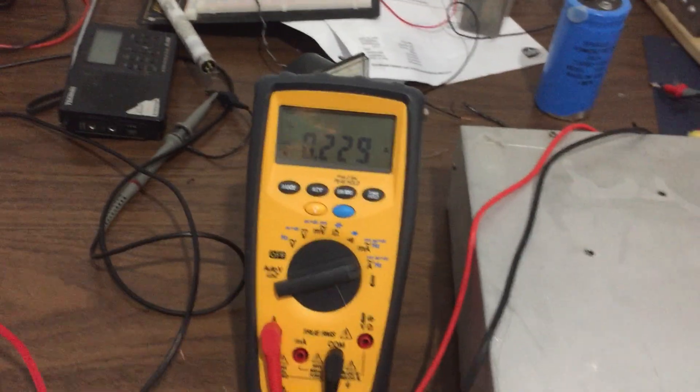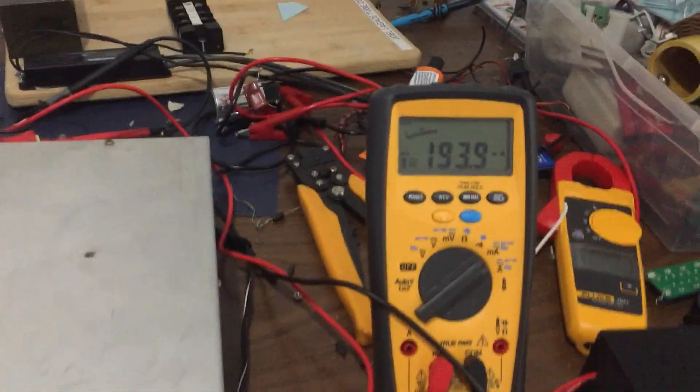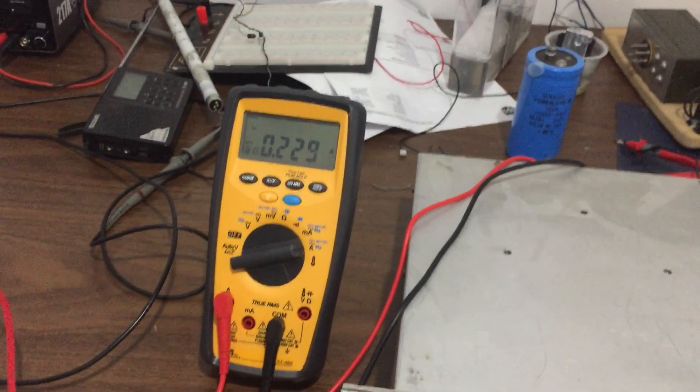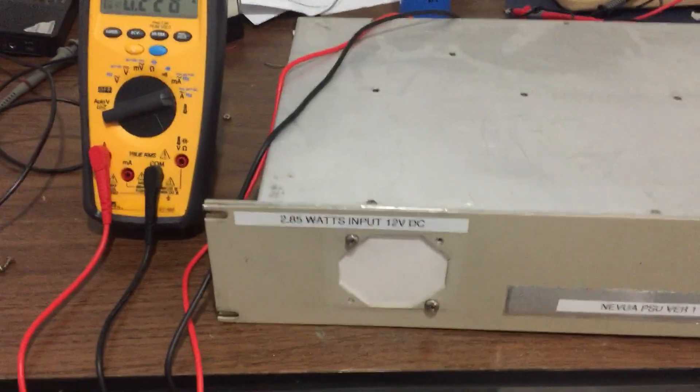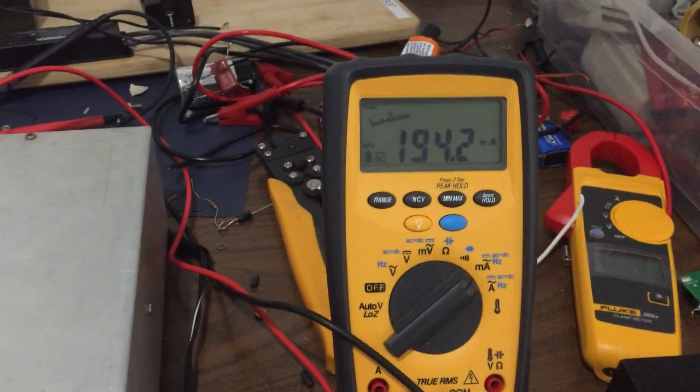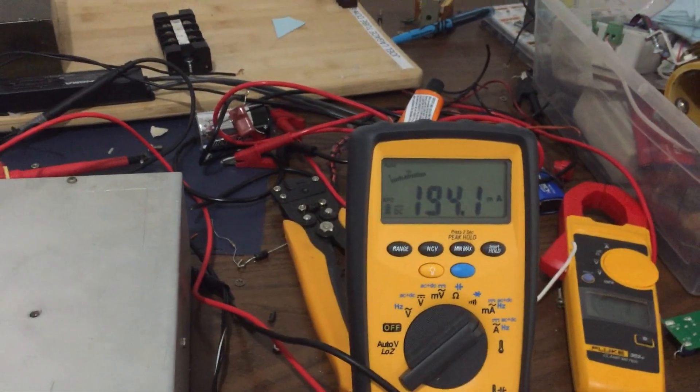So here's my in meter here roughly and the out meter. So 229 milliamps right now at 12 volts input and 24 volts output at 194.2 milliamps.